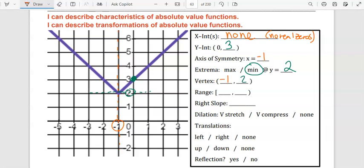For the vertex, you just put that x-value and that y-value together. It's the part where it changes direction.